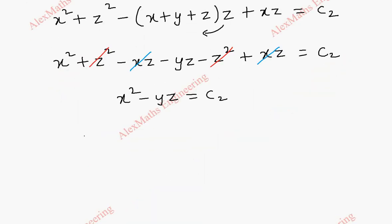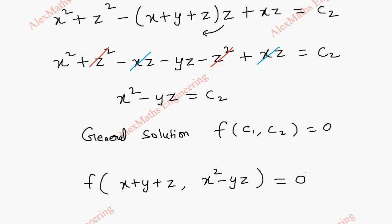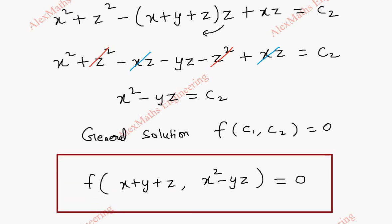Now after getting c1 and c2 we can write the general solution. The general solution is in the form f(c1, c2) = 0, where c1 = x+y+z and c2 = x²−yz. Thus we got the solution for the given partial differential equation using Lagrange's multiplier method.